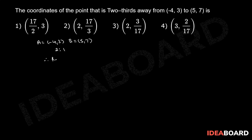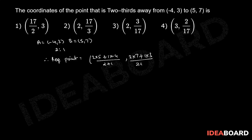Therefore, required point equals two into five plus one into minus four, divided by two plus one, comma two into seven plus one into three, divided by two plus one. That equals ten minus four by three, comma fourteen plus three by three.